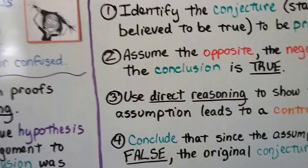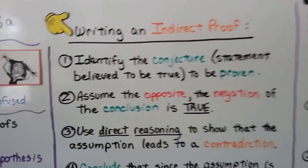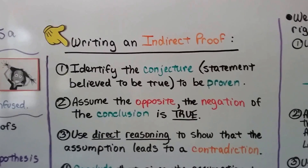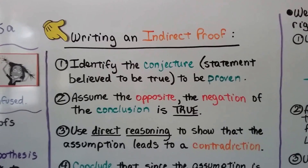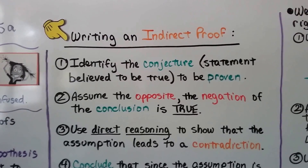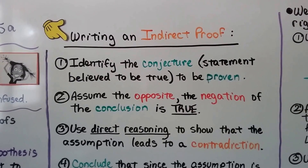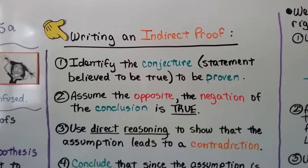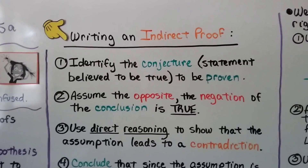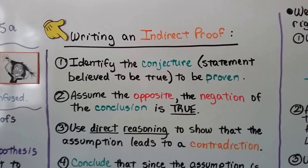For writing an indirect proof, the first thing we do is identify the conjecture — that's the statement believed to be true, to be proven. So we identify the conjecture to be proven.